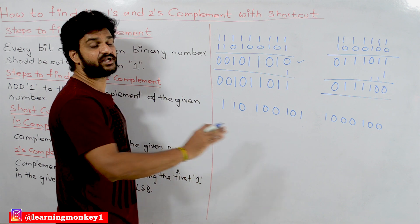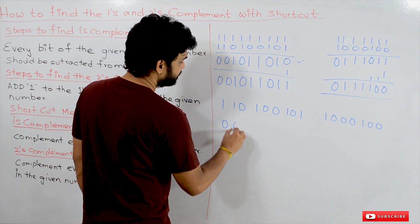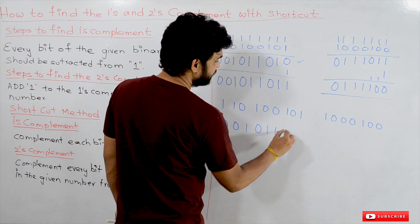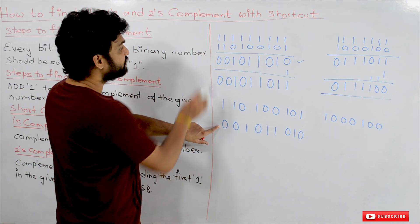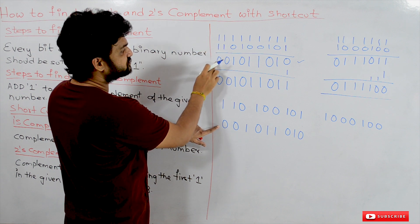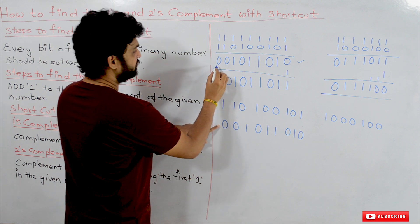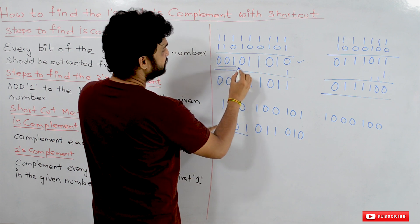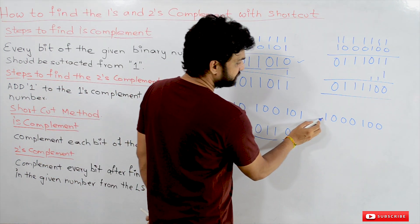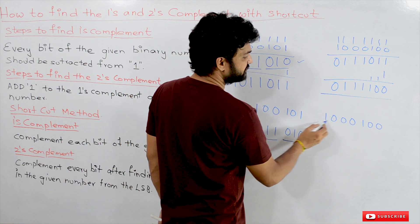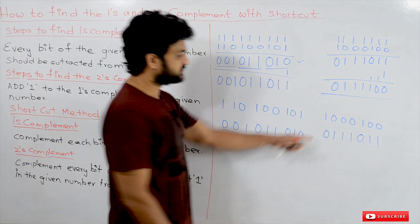Just complement the given binary number and you get the ones complement. The complement of the given number is 0 0 1 0 1 1 0 1 0. Now check this against the ones complement found using the regular method — we are getting the same number: 0 0 1 0 1 1 0 1 0.